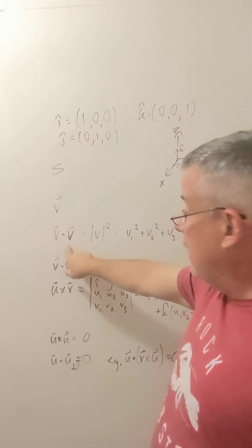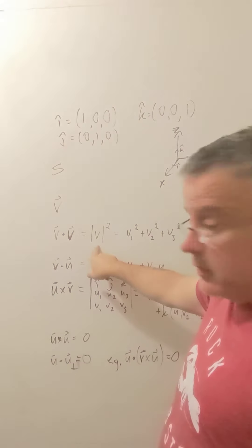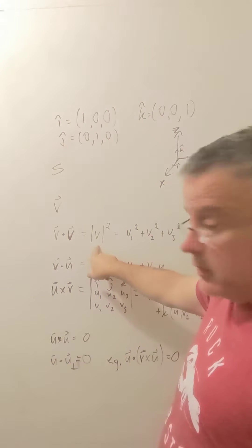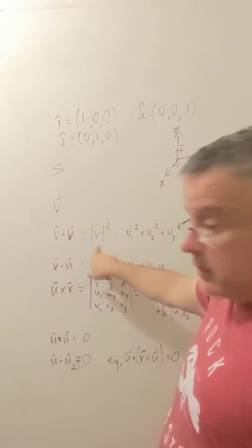A vector dotted with itself is the magnitude of the vector squared - this is a scalar. Two different vectors dotted together is also a scalar, but the self-dot is positive definite because each component is squared. The dot product of two different vectors could be positive or negative: it is maximum if the two vectors are aligned with one another for given magnitudes, opposite when they're anti-parallel, and zero if they're perpendicular to one another.